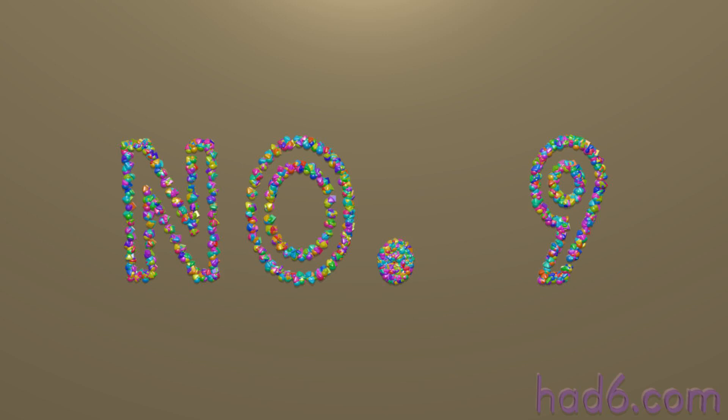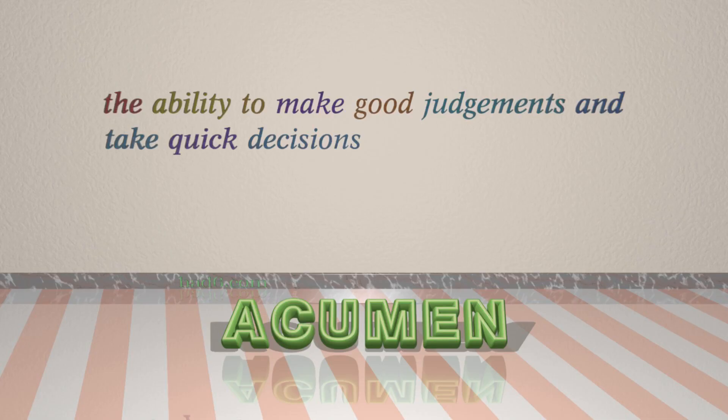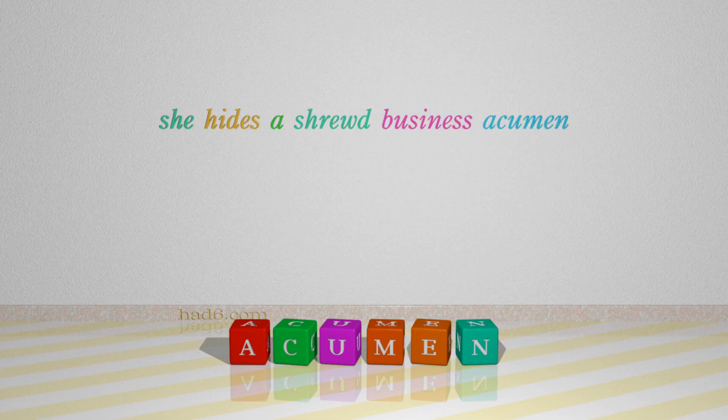Number 9: Acumen, which means the ability to make good judgments and take quick decisions. For example: She hides a shrewd business acumen.